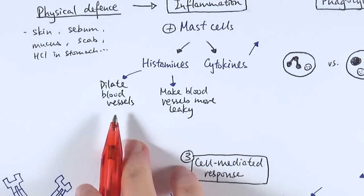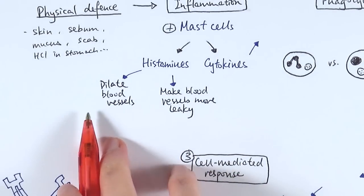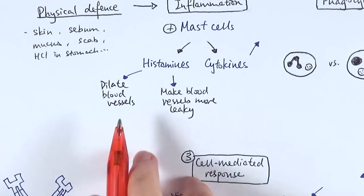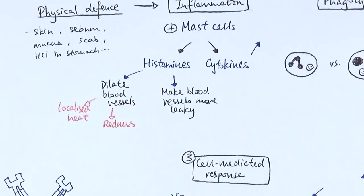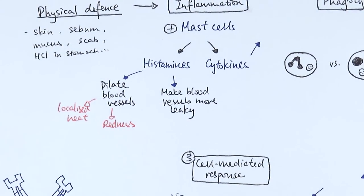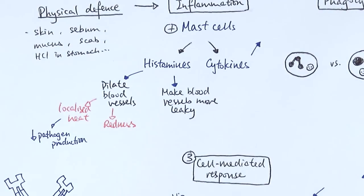Because of the dilation of blood vessels — vasodilation — it leads to two specific symptoms: localised heat and redness. The point of localised heat is that by increasing the temperature, pathogens' reproduction rate slows down — they just don't like being in a really warm temperature. The redness shows that dilating blood vessels means more blood flows to the surface of the skin, therefore showing a red patch.